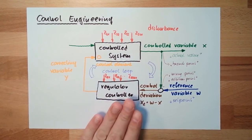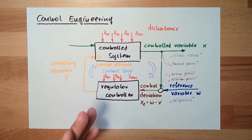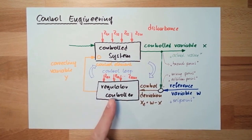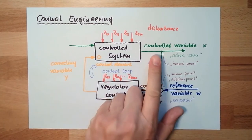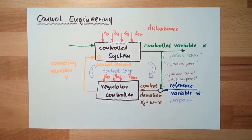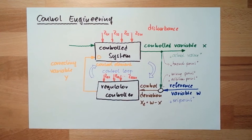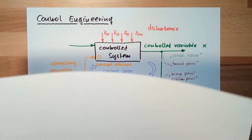Looking at this picture, the first thing we need to pick is the controlled variable. I need to pick a controlled variable because only if I know what I want to control can I think about how to do it. I need to check if this controlled variable is meaningful — do I have advantages from controlling this variable, or is it just for nothing?